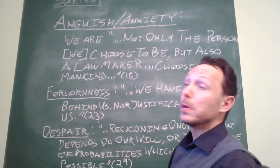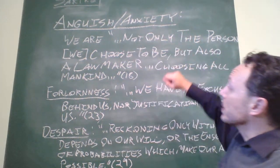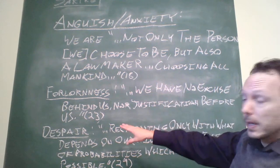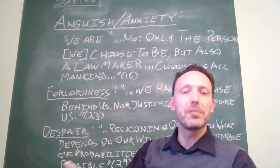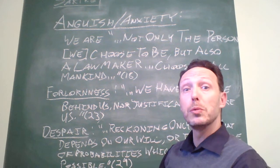So these are the specific emotions: anguish or anxiety, forlornness, and despair. Very quickly I'm just going to go over them so that we have an idea of what they mean to us.